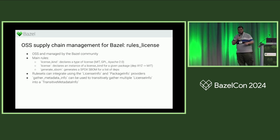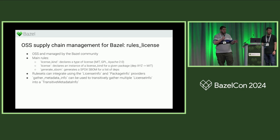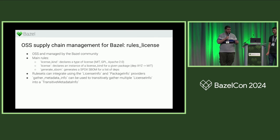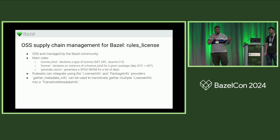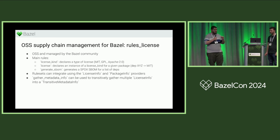We've mostly been using our own customized rules, but over time we want to adopt rules_license. So let's talk about what rules_license does and what the current gaps are. It's in the Bazel build organization on GitHub, meaning it's open source and managed by the Bazel community. The three main rules are: 'license_kind', which declares a license in isolation like MIT or Apache 2; 'license', which binds that license to a specific target; and 'generate_sbom', which does what the name says — generates an SBOM. Sadly, that SBOM is currently only SPDX, but more formats are coming.